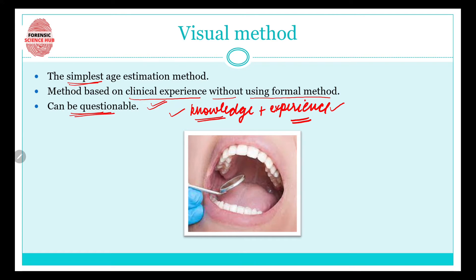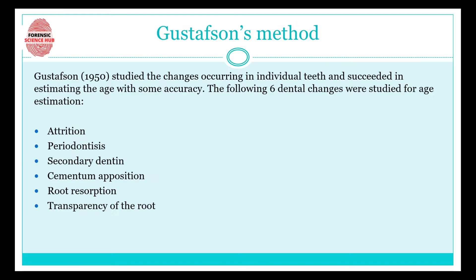This method is questionable because how we perceive something is subjective — another person may perceive the same thing differently. Moving on to Gustafson's method, which is a very important method already discussed in detail in a previous video. In short, Gustafson in 1950 came up with a method in which six dental changes were studied.